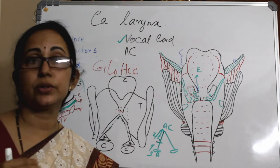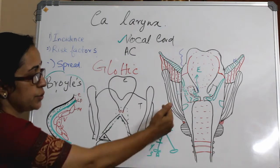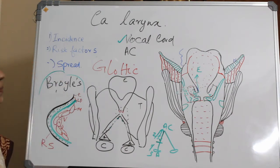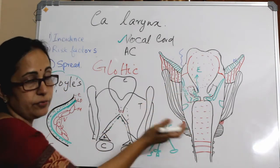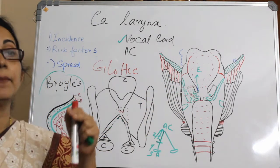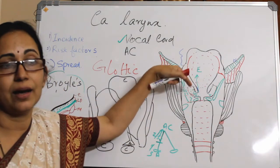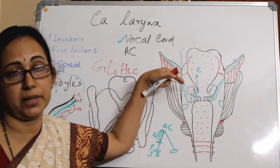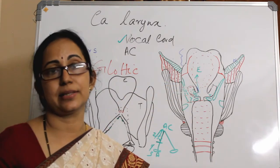The vocal ligament is not breached in the initial stages. The horizontal spread toward the anterior commissure is most common, where it is limited by the anterior commissure tendon. If it spreads vertically, it can go either superiorly or inferiorly. In both directions there are barriers. When it goes superiorly, the barrier is the ventricle, which acts as a barrier to spread. Inferiorly, the barrier is the conus elasticus.